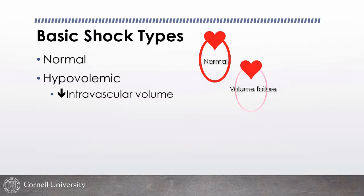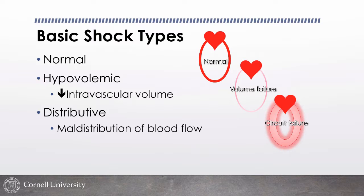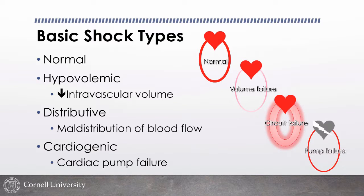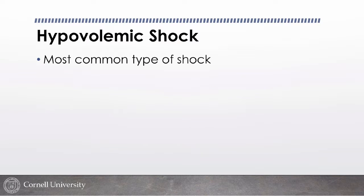With distributive shock, the heart is working fairly well and volume may be adequate, but the circuit is flaccid and unresponsive — volume is in all the wrong places, resulting in inadequate oxygen delivery. With cardiogenic shock, it's the pump that's broken. The tissues scream for oxygen, the circuit constricts to send blood to the heart and brain, but the diseased heart can't handle the increased volume returning due to vasoconstriction, making things worse. Hypovolemic shock is by far the most common type.